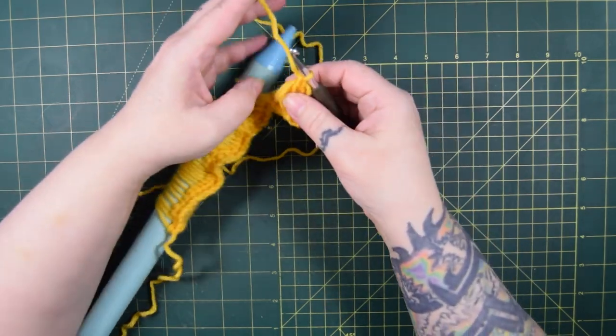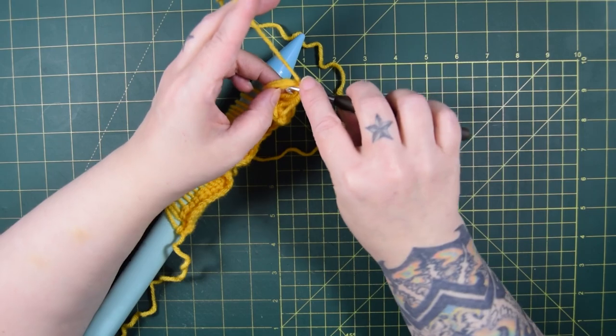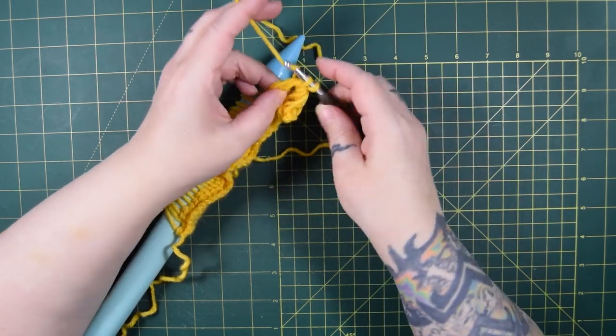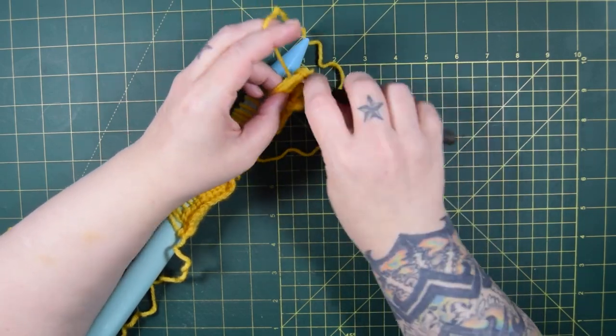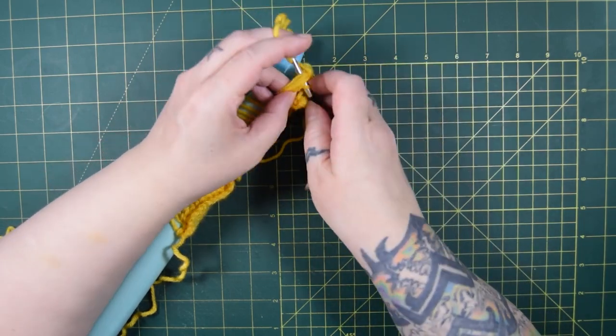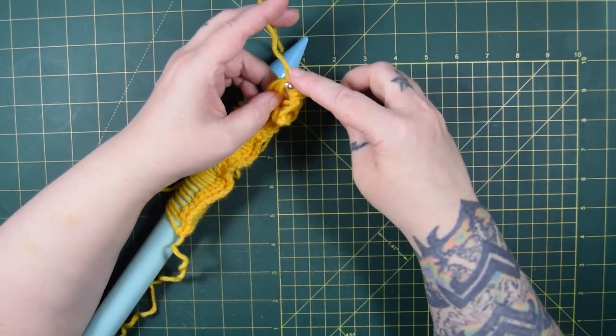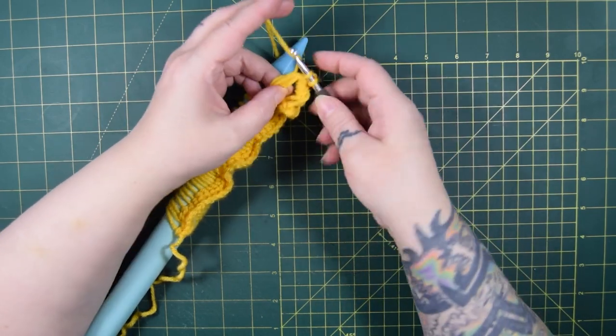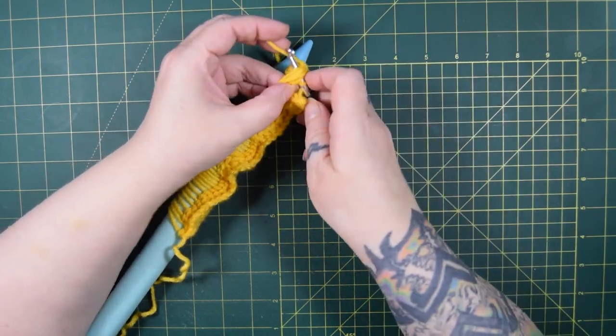You start every row with a chain 1. This does not count as a stitch, it's just going to keep the group of loops secure. Next, you'll single crochet 5 through all of the loops. I like to open the swirl up a bit and hold it in place using the ring finger and thumb on my left hand.